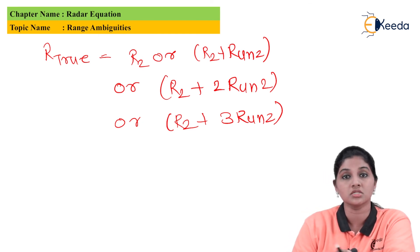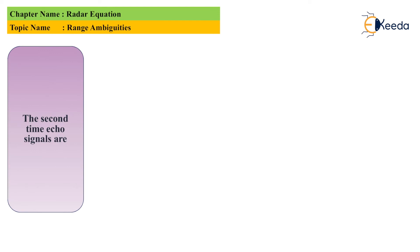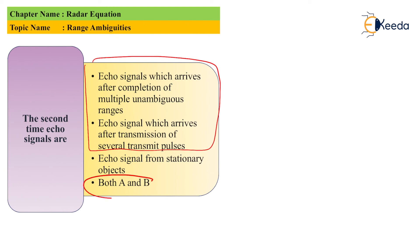This is what range ambiguities present in radar operation are about. Now the first MCQ: the second time echo signals are — option A: echo signals which arrive after completion of multiple unambiguous range; option B: echo signals which arrive after transmission of several transmit pulses; option C: echo signals from stationary objects; option D: both A and B. The correct answer is option D, both A and B.